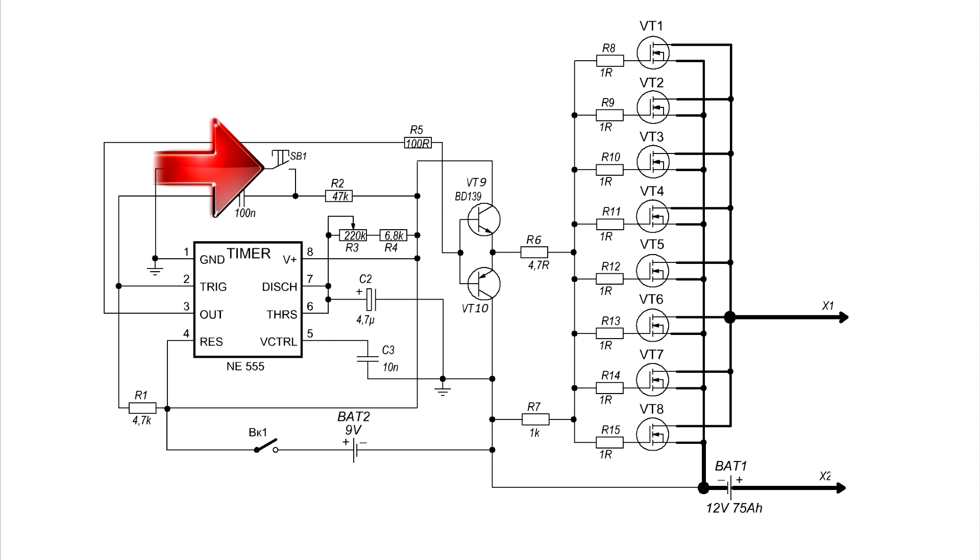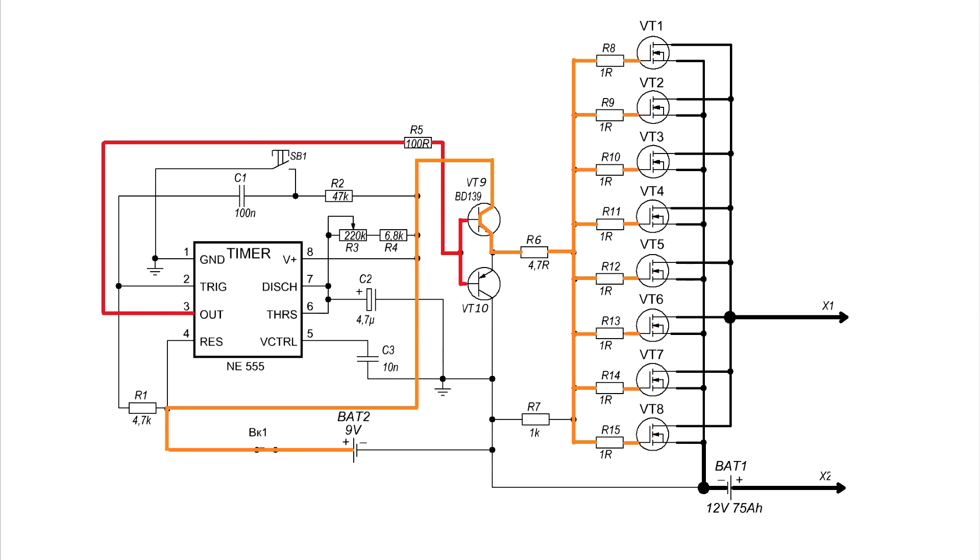When the button is pressed the positive signal from the output of the microcircuit NE555 goes to the base of the transistors. The upper transistor will open and through it the pulse from the low current source goes to the gate of the field effect transistors. A positive signal opens the FETs and through them the main power voltage from the batteries goes to electrodes.